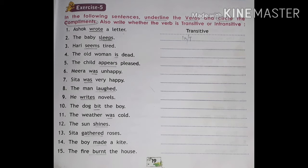Number three: Harry seems tired. Underline 'seems' and 'tired' is the complement — write intransitive verb and underline 'tired'. Number four: the old man is dead. Underline 'is' and 'dead' is the complement of 'is'. Write transitive verb.